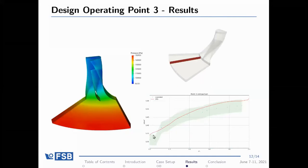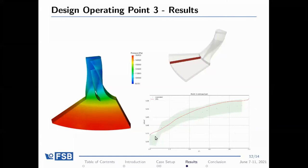We also compared to experimental data for pressure rise in the diffuser area. The reaction of the stage is approximately 0.5, since the pressure increase in the rotor and stator is approximately the same. On this plane we compared pressure rise — blue points are experimental data, the red line is our calculated pressure, and the shaded area corresponds to measurement uncertainty.